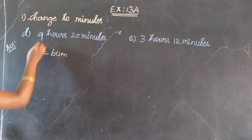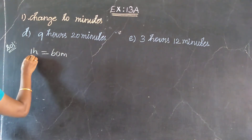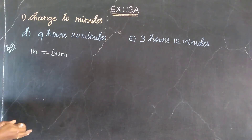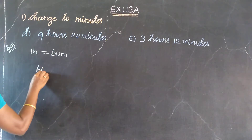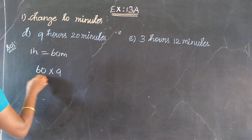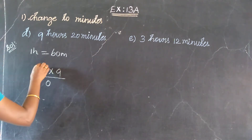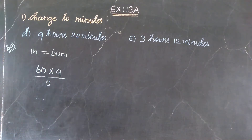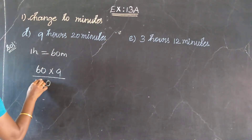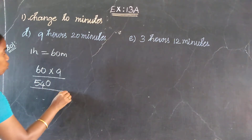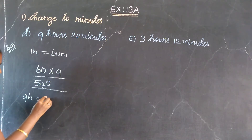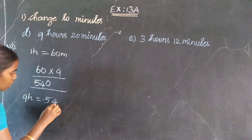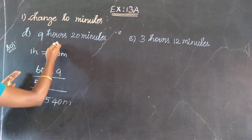So, hours multiplied — 60 into 9. So, 9 fours are 36, carry 3 — 9 fours are 54. So, in 9 hours which is equal to 540 minutes. So, hours are now changed for you.